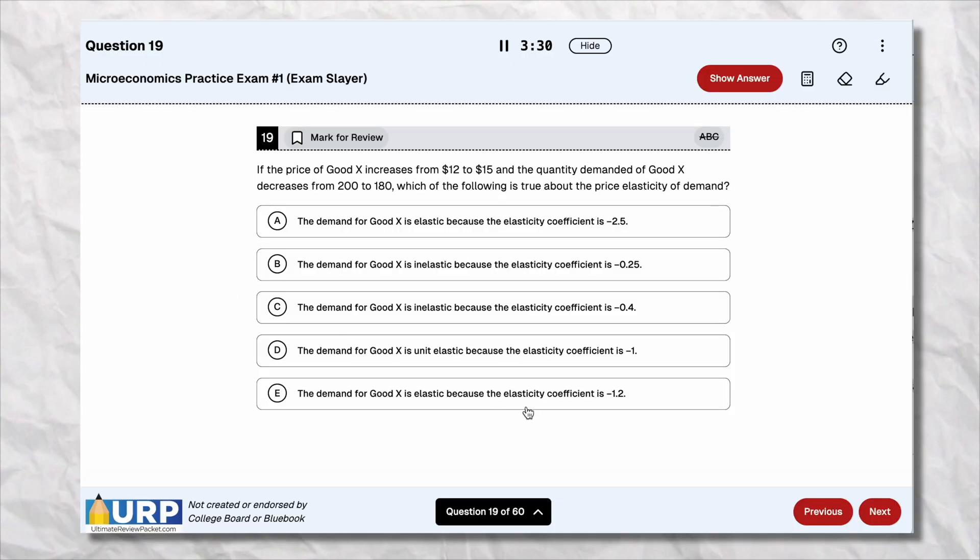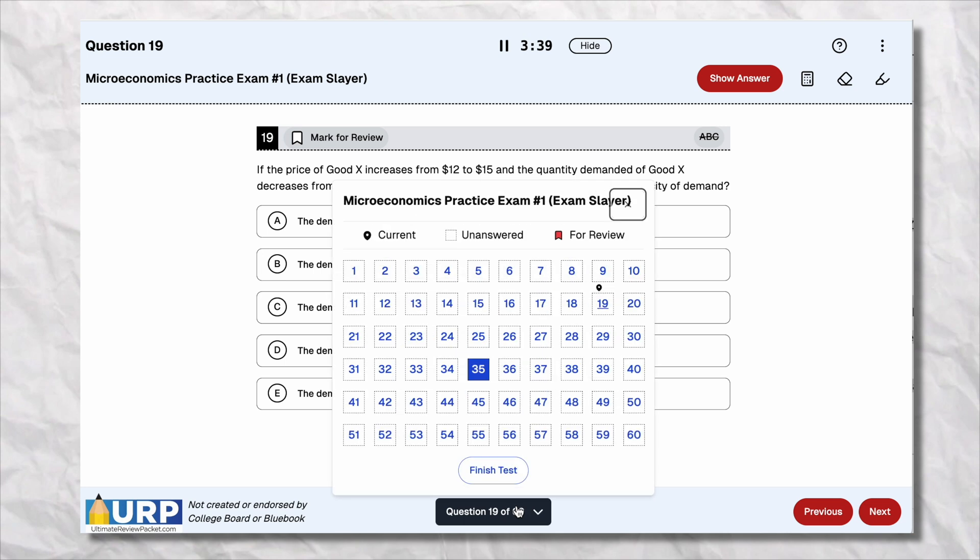I'm ready! When you start the multiple choice section, you'll see there's a timer on the top that's going to count up. On the real AP exam, you only have 70 minutes, but since this is for practice, you can go above that limit.